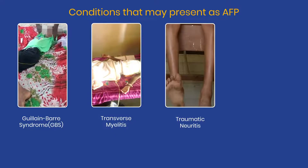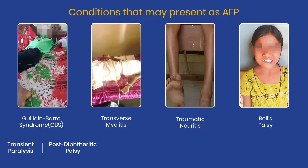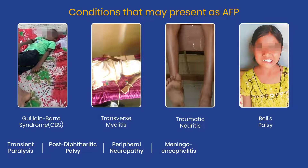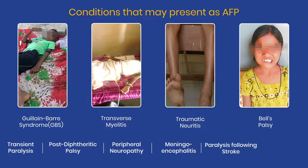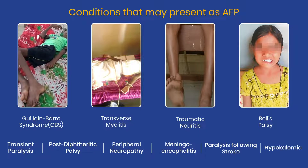Conditions that may present as AFP are Guillain-Barré syndrome, transverse myelitis, traumatic neuritis, Bell's palsy, transient paralysis, post-diphtheric palsy, peripheral neuropathy, meningoencephalitis, paralysis following stroke, and hypokalemia, among others.